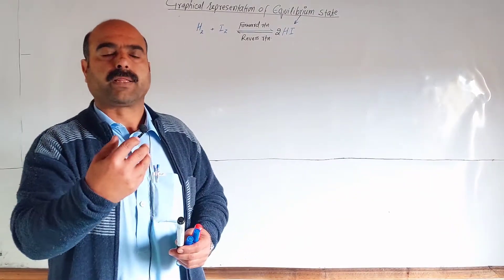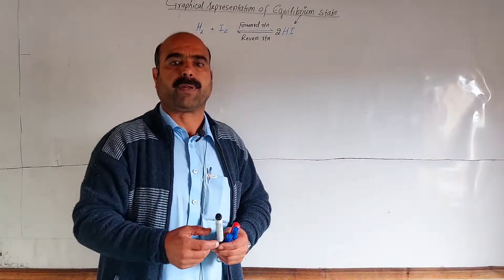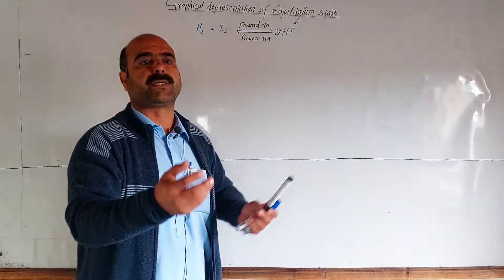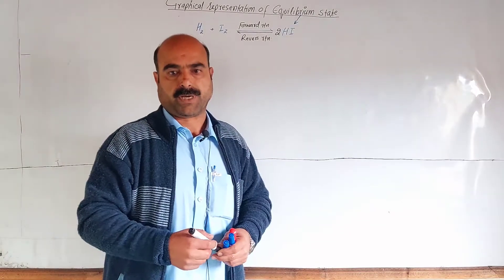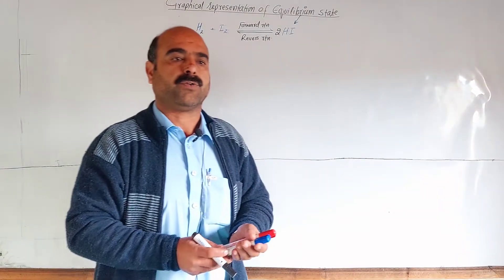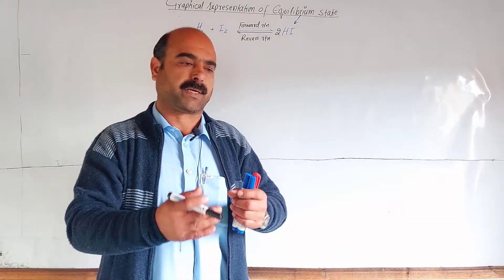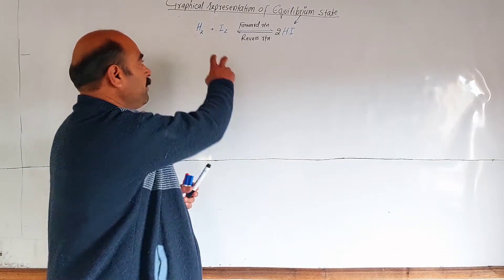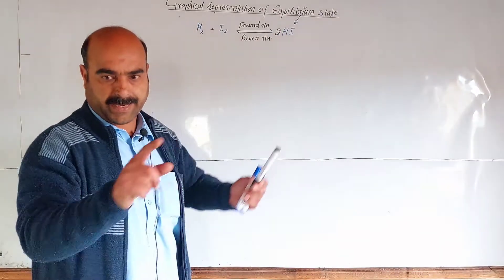No further increase in the concentration of products will take place, and no further decrease in the concentration of reactants will take place. The equilibrium state exists. At equilibrium, both the reactant and product concentrations remain constant, even though the process continues dynamically.